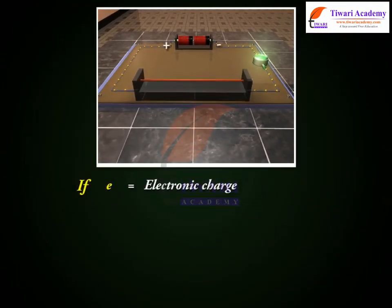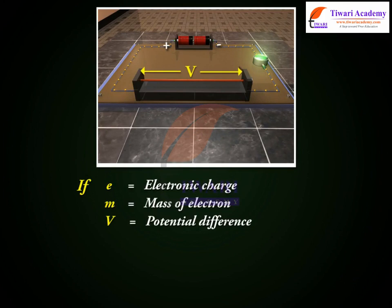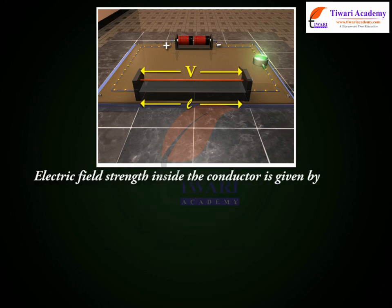If e is equal to electronic charge, m is equal to mass of electron, v is equal to potential difference, l is equal to length of conductor, then electric field strength inside the conductor is given by e is equal to potential difference by length is equal to v by l.